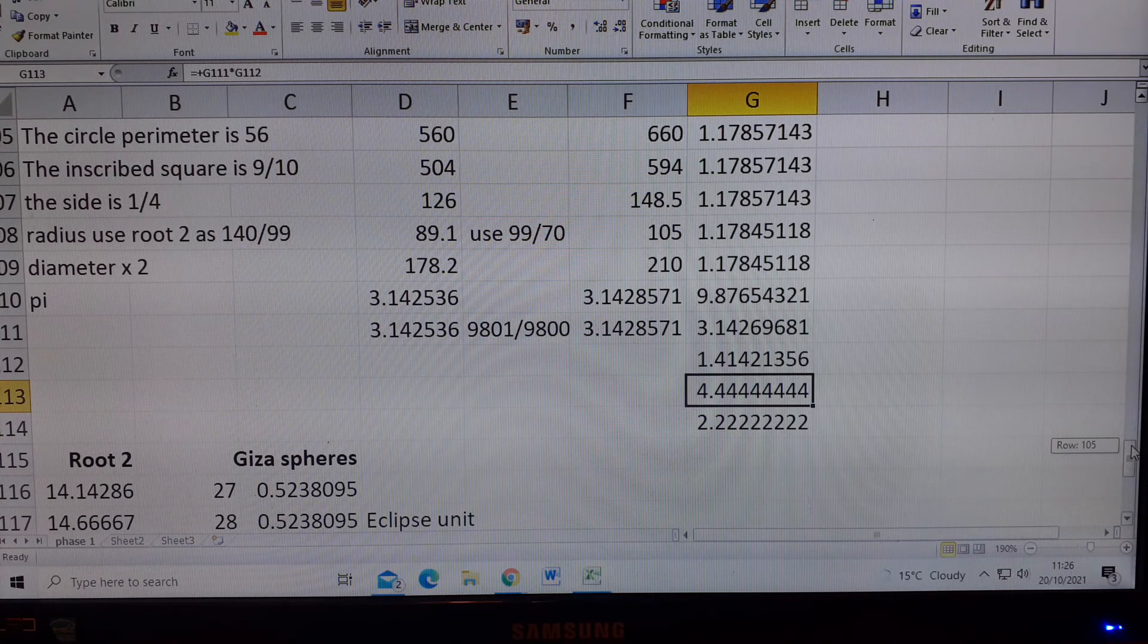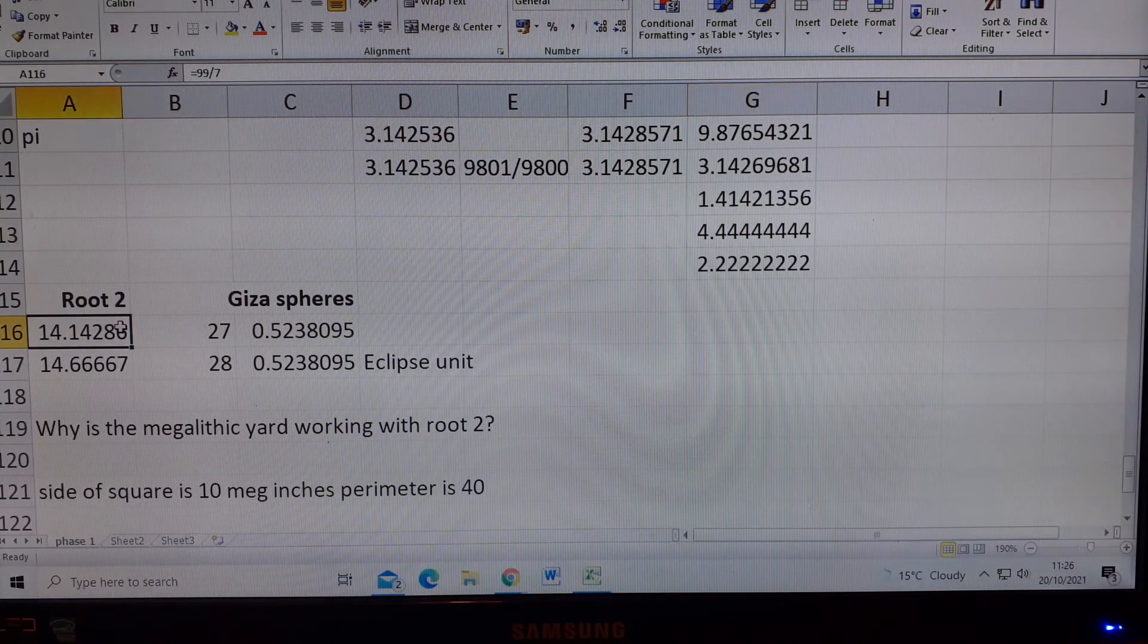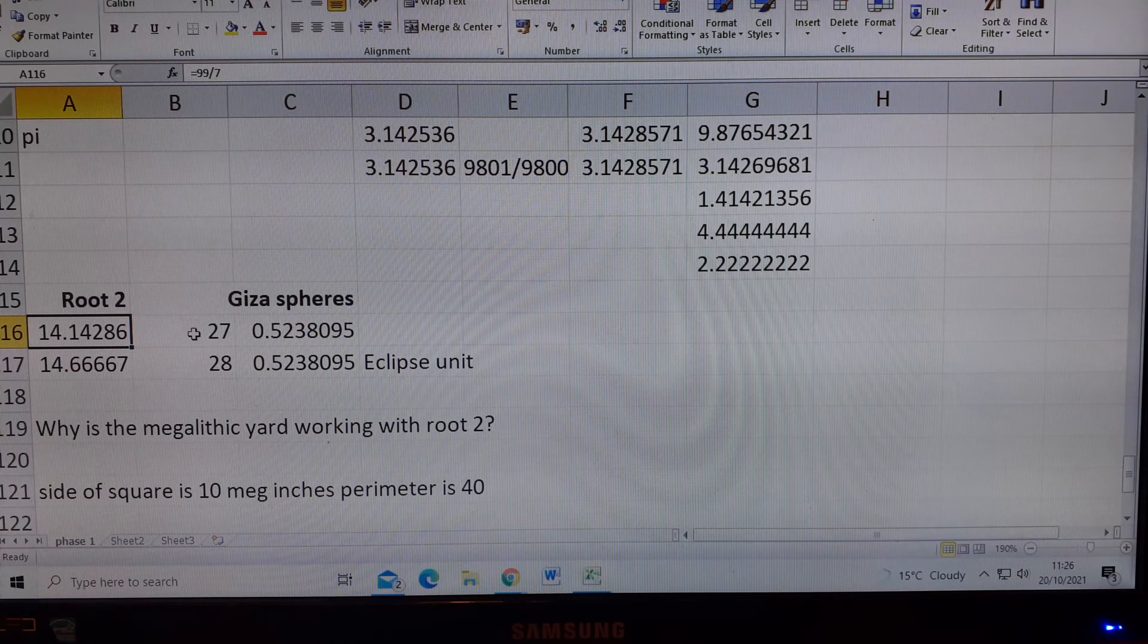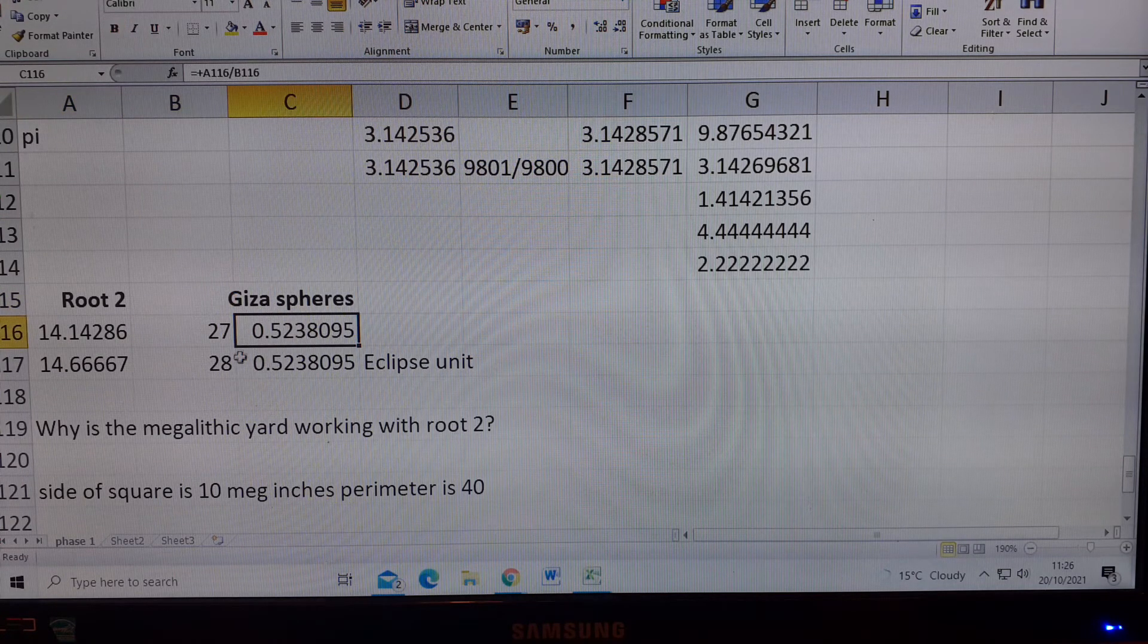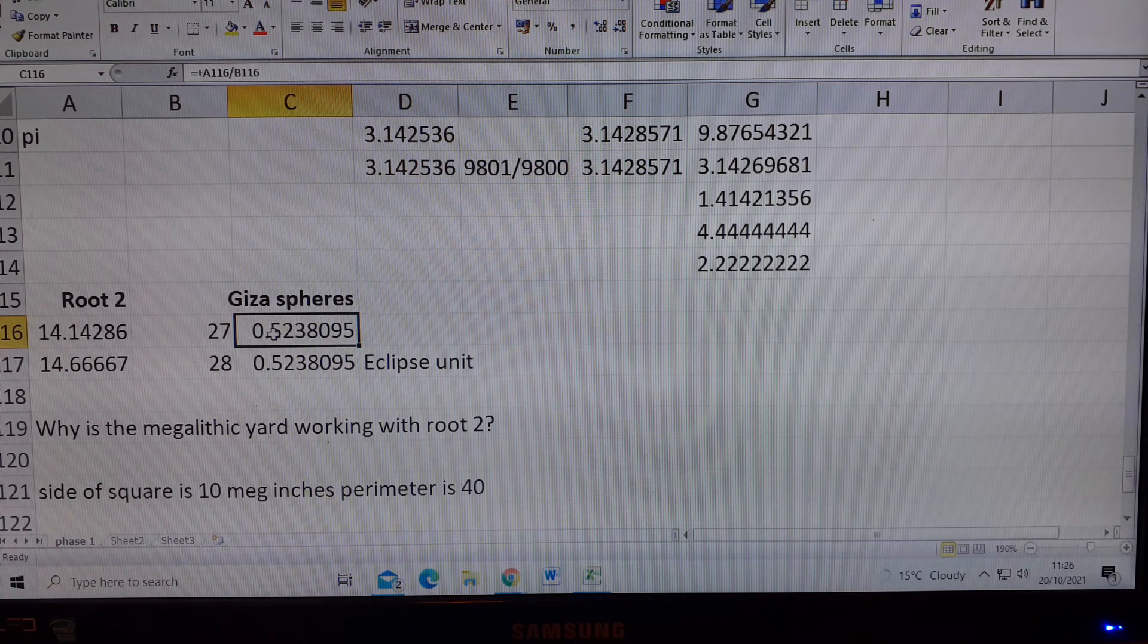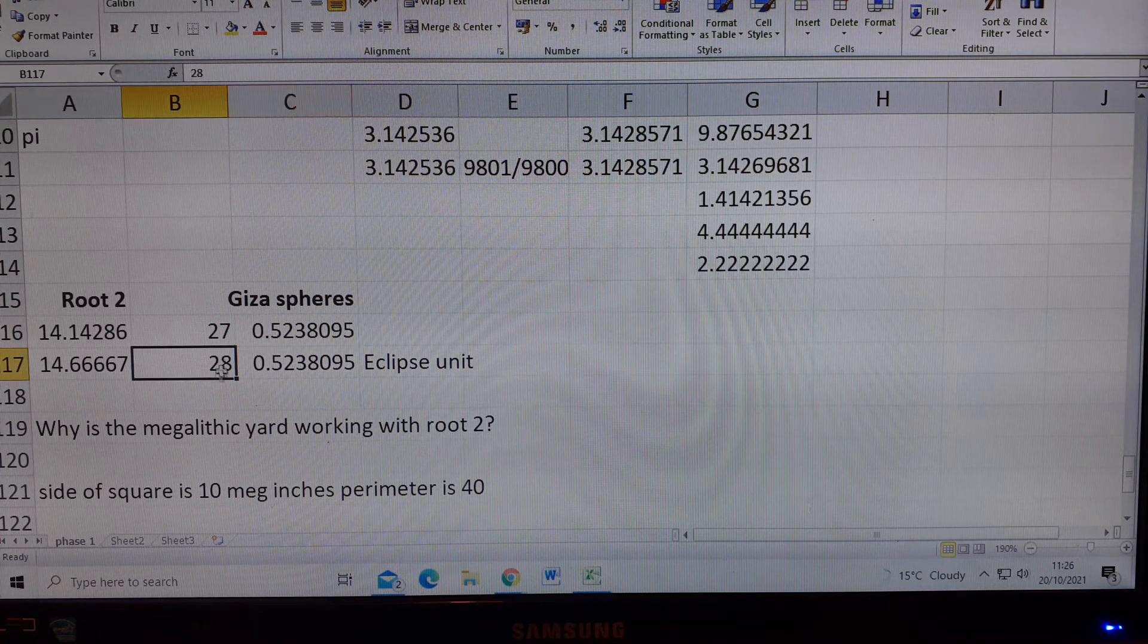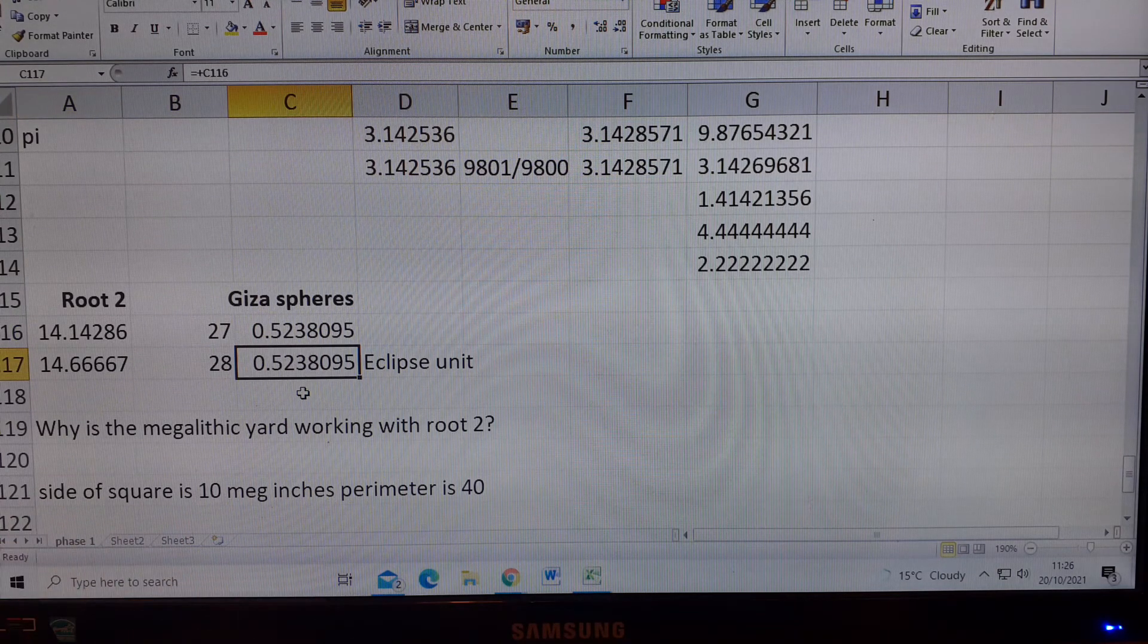So now we go on to this version of root 2. And there it is, root 2. Divide it by 27, and we get into Gieser spheres. That's the Gieser sphere, and I've written a presentation about the Gieser sphere. If we divide it by 27, and multiply it by 28, we get the eclipse unit, and that's 28 Gieser spheres.